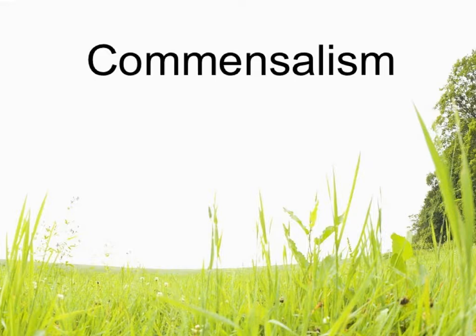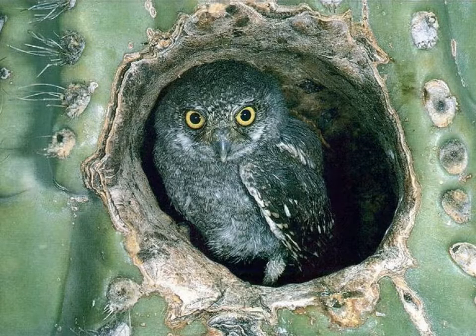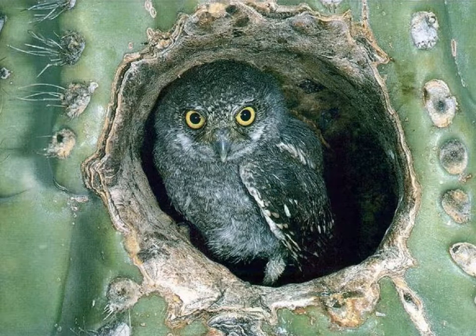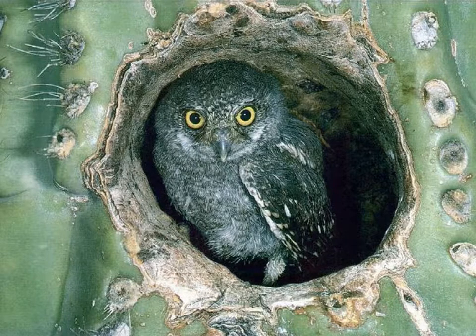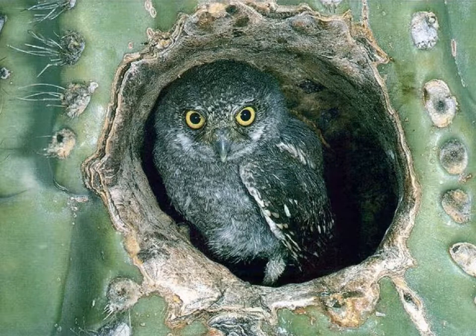The next type of relationship is called commensalism. In commensalism, one organism benefits, while the other does not benefit but is also not harmed. For example, here is a picture of an elf owl living inside of a cactus. The owl benefits because the cactus provides shelter from the weather, a safe place to get away from predators, and a safe place to raise its young. The cactus, however, doesn't benefit at all, but it's also not hurt. The owl did not dig this hole — it simply moved in once the hole became available.